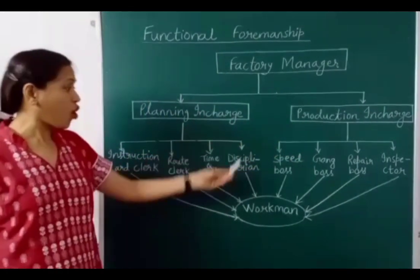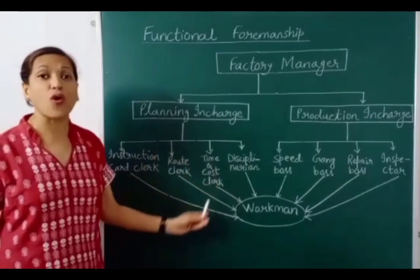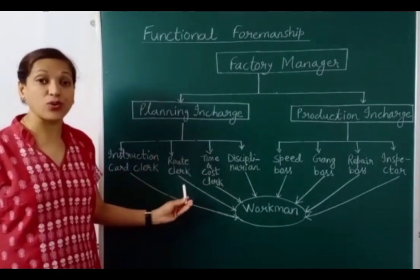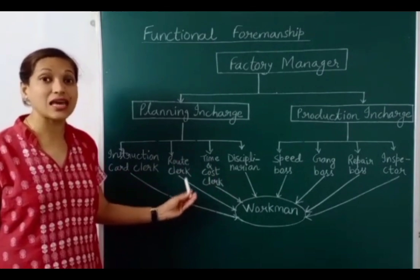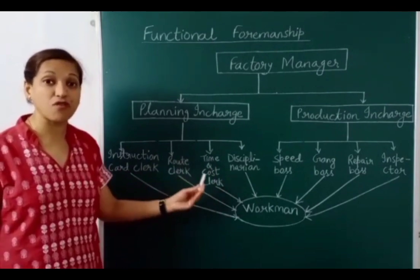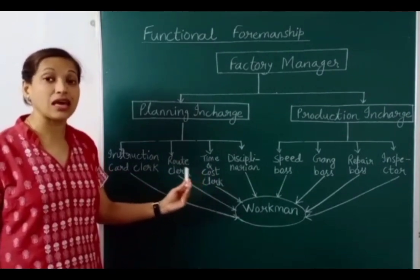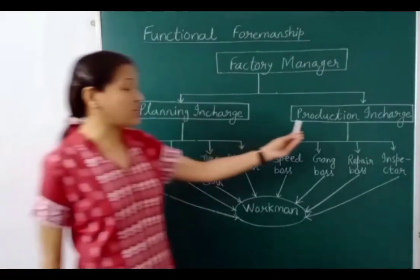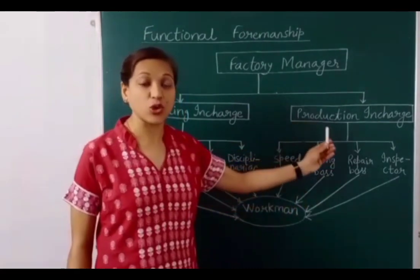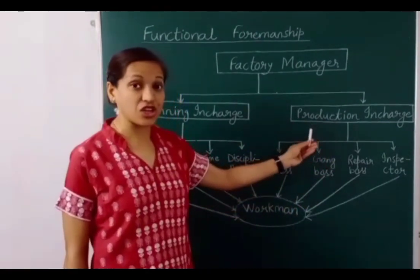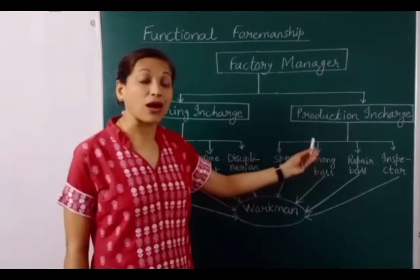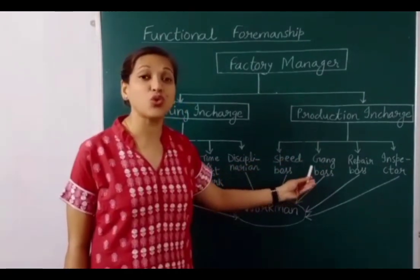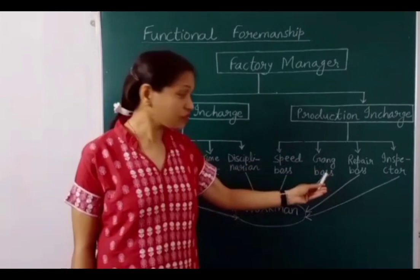In the planning team there will be certain required qualities: technical mastery, education, intelligence, and firmness of mind — meaning the ability to say the right thing. The production side requires qualities like energy, good health, and manual dexterity — meaning the ability to work with hands.